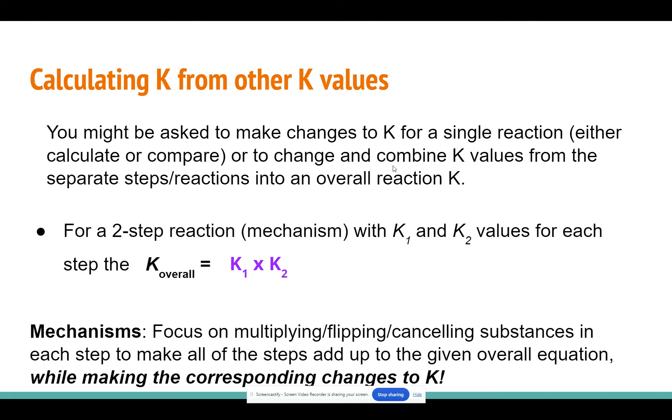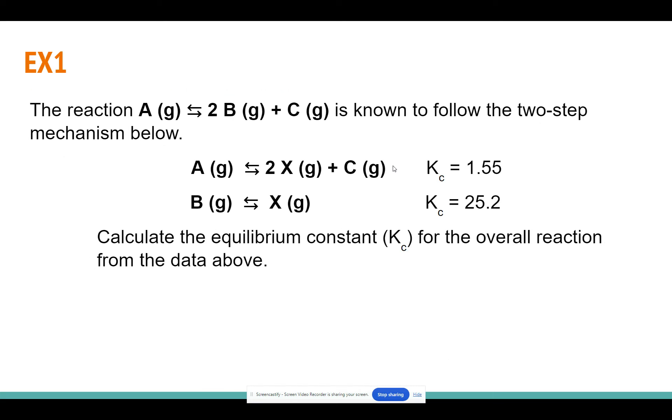So first, start by looking at the individual steps, the different partial reactions for the mechanism, and multiply or flip or cancel the substances that you need to in order to turn it into the overall reaction. And then your final step is always going to be to add up your reactions, which will mean multiply the K values after you've made any other changes to them. So let's see this in action in this first example.